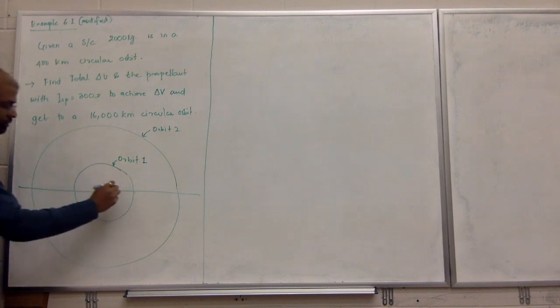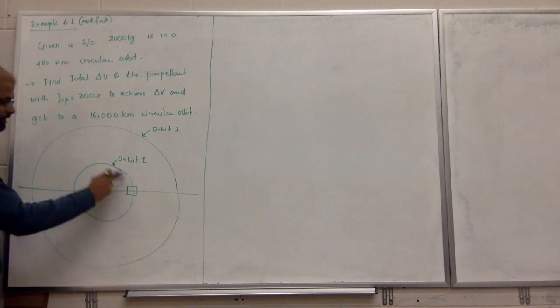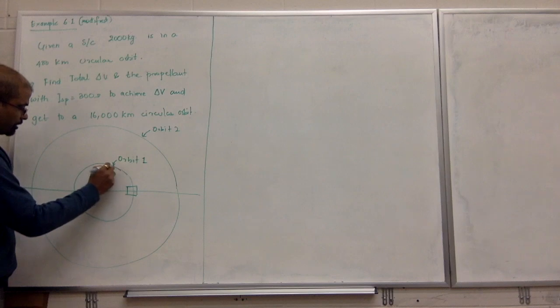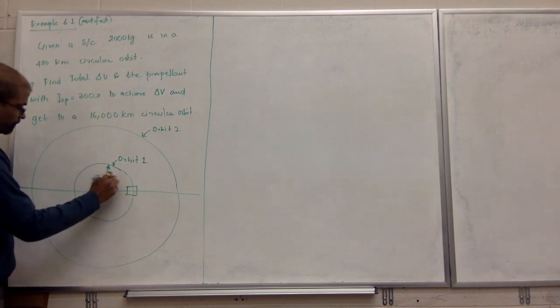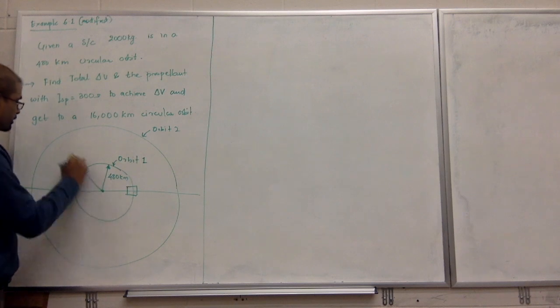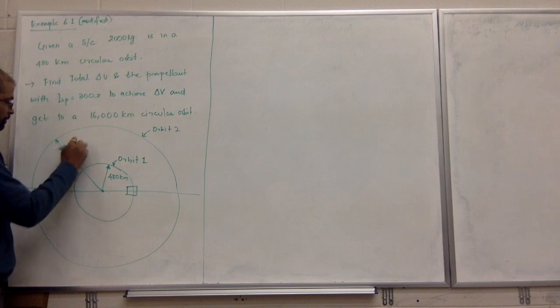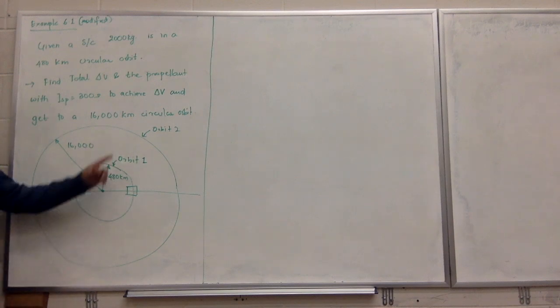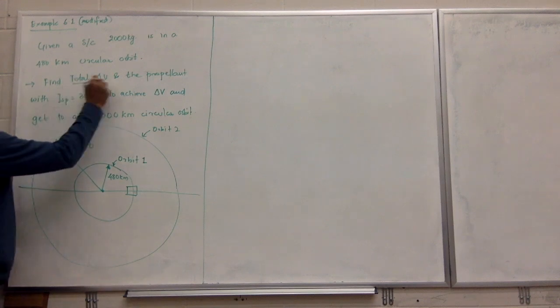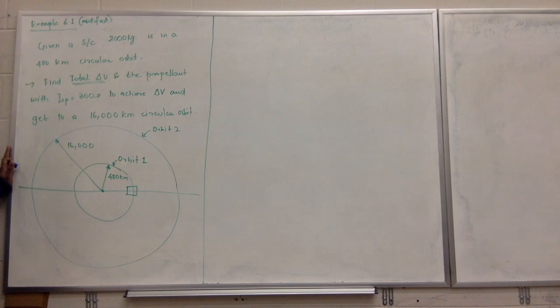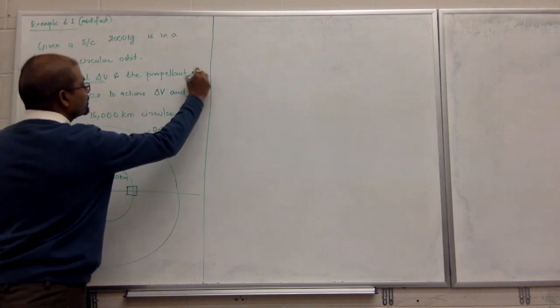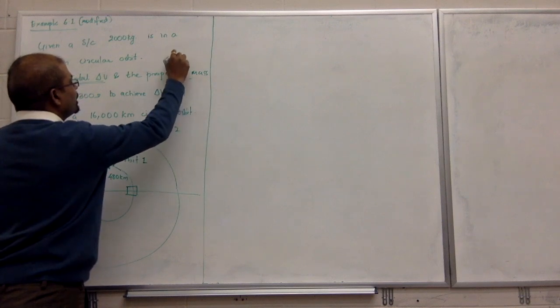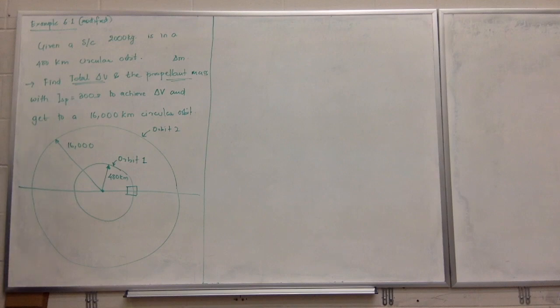The spacecraft is here, it's in this orbit. What is this distance? 480 kilometers. And what is this distance? 16,000 kilometers. The goal is to put this spacecraft in this orbit and figure out two things: total delta V and propellant mass, delta M.